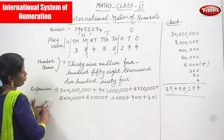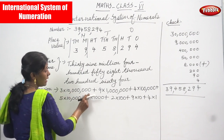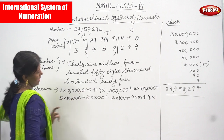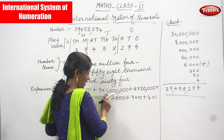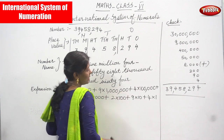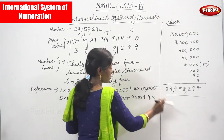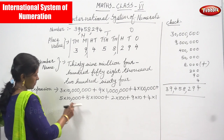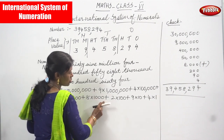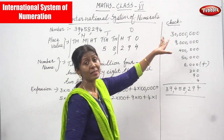The expansion form: 3 × 10,000,000 + 9 × 1,000,000 + 4 × 100,000 + 5 × 10,000 + 8 × 1,000 + 2 × 100 + 9 × 10 + 4 × 1. So three into ten million = thirty million, nine into one million = nine million, four into hundred thousand = four hundred thousand, five into ten thousand = fifty thousand, eight into one thousand = eight thousand, two into hundred = two hundred, nine into ten = ninety, four into one = four.